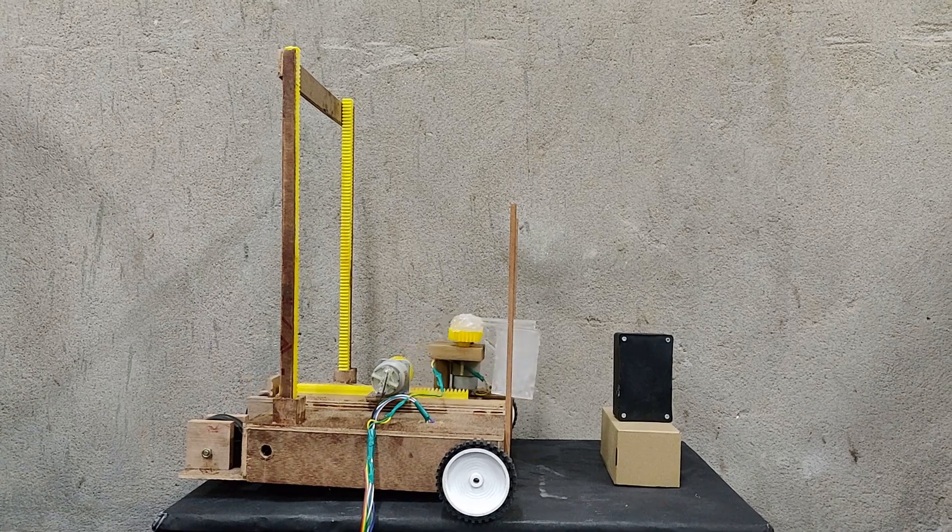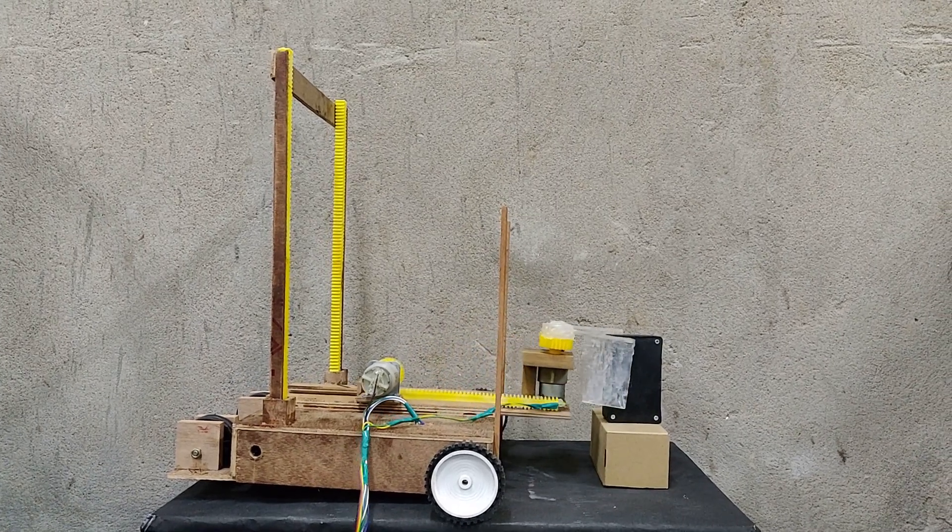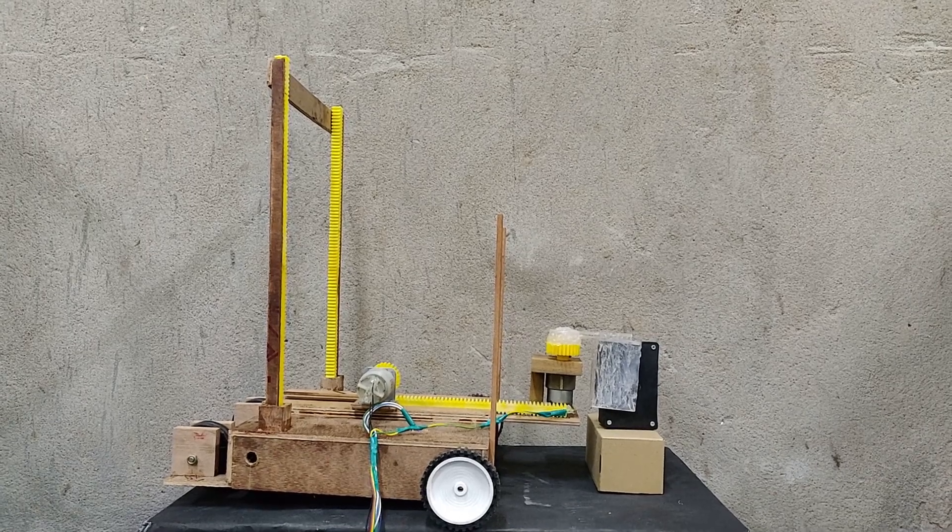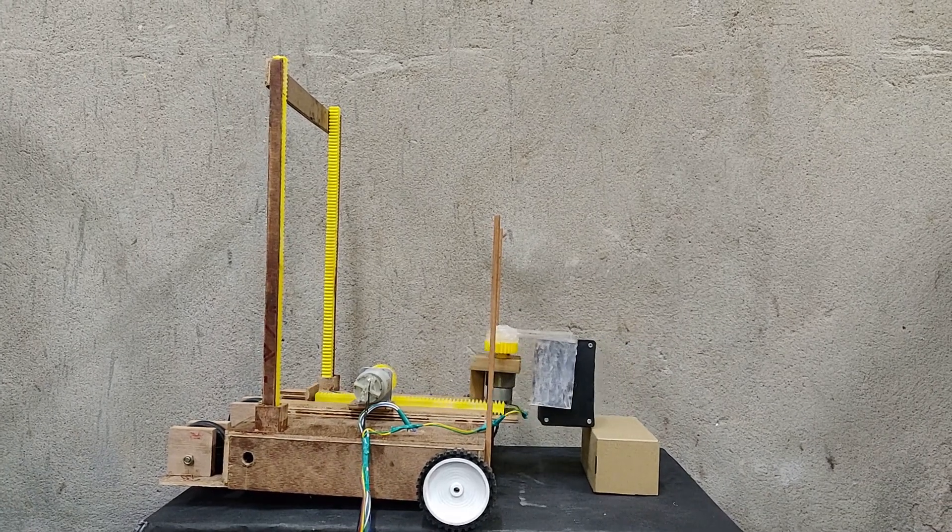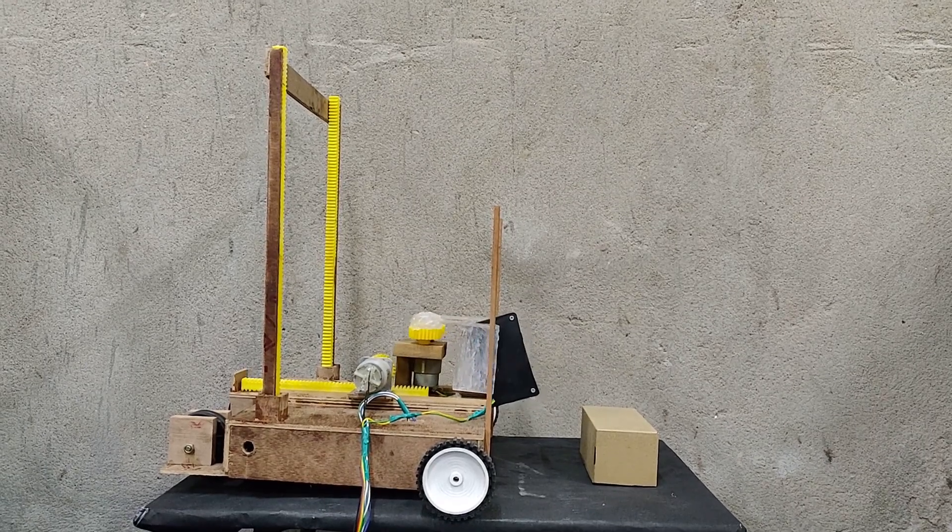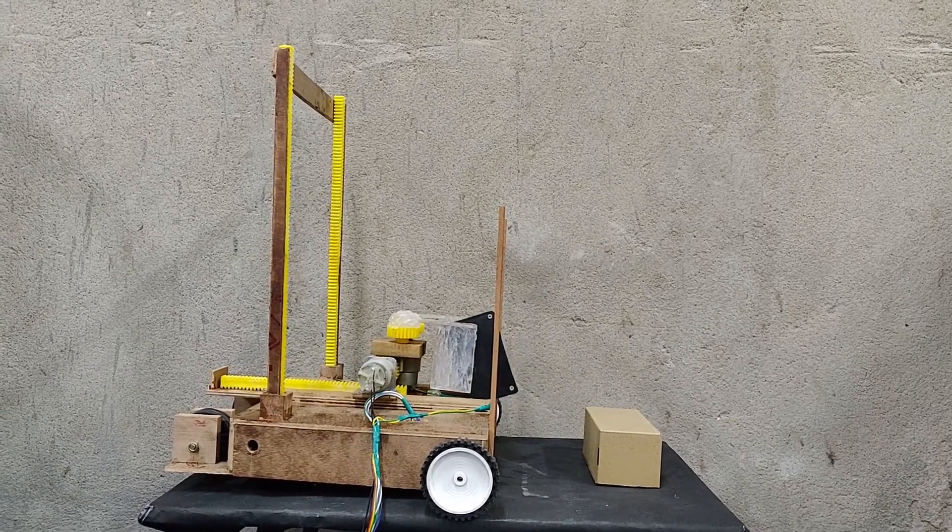The next challenge for the bot is to pick up an obstacle using its gripper mechanism. It does so with the help of its gripper arms attached to two pinions rotating in tandem powered by a motor. This assembly is mounted on another rack and pinion which provides for the gripper's extensibility.